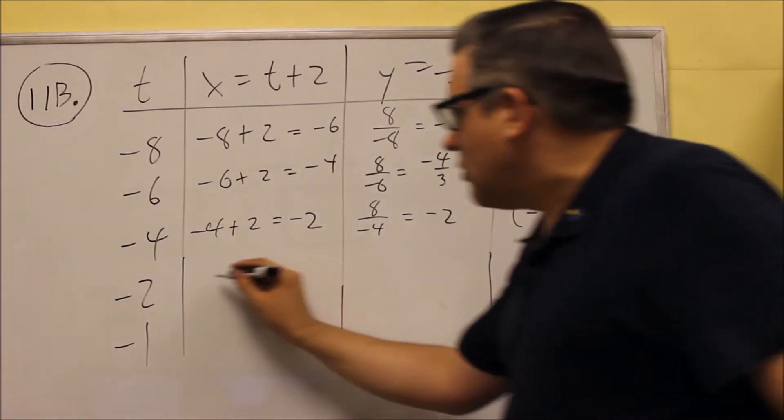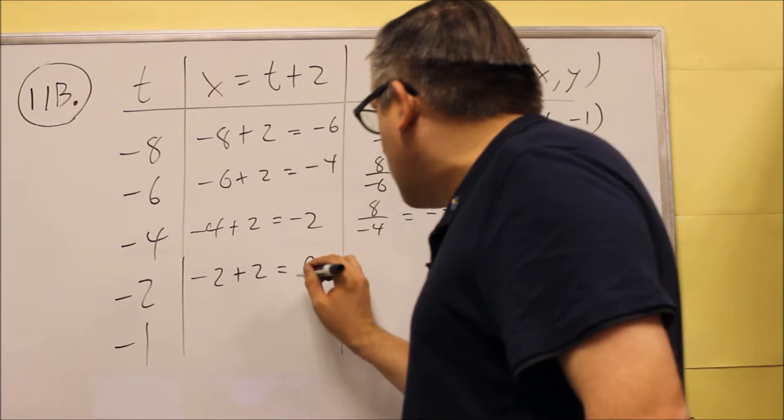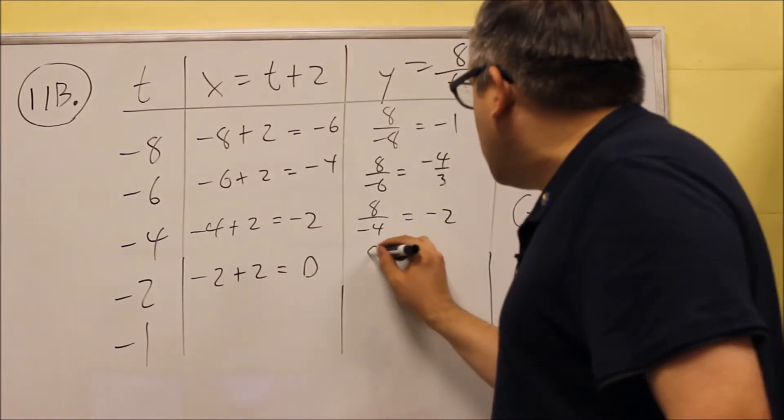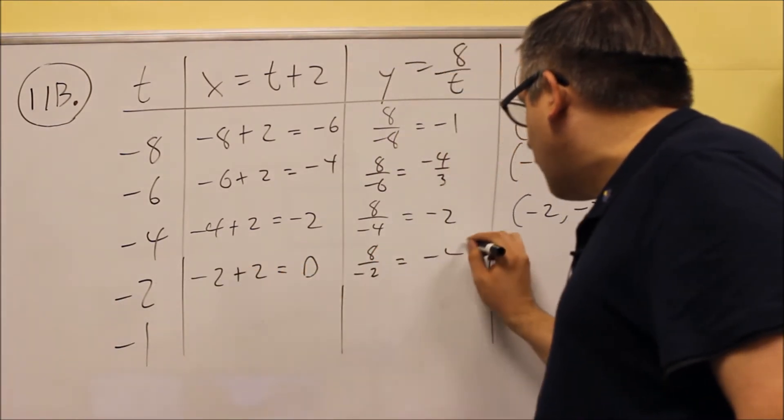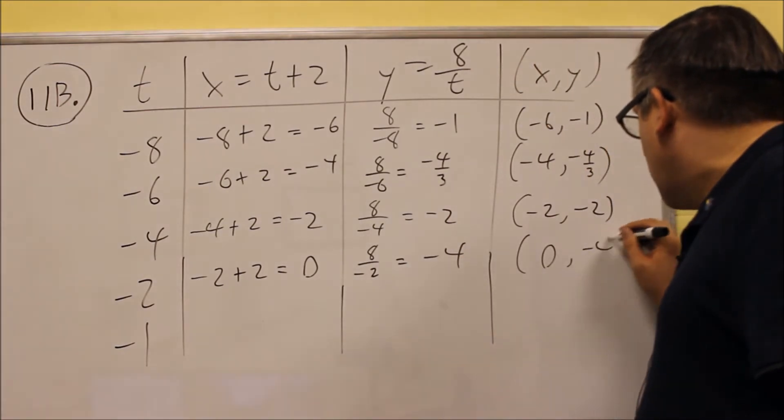Next we got negative 2 plus 2 is 0. Then we do 8 divided by the t value, negative 2, is negative 4. So 0, negative 4.